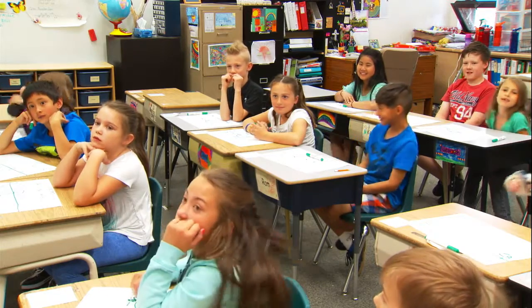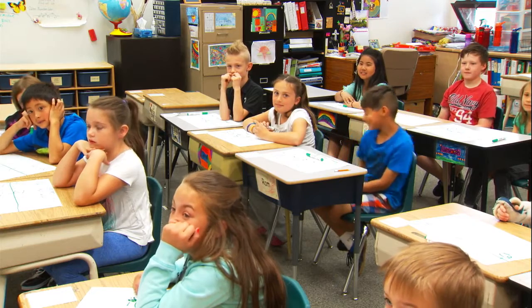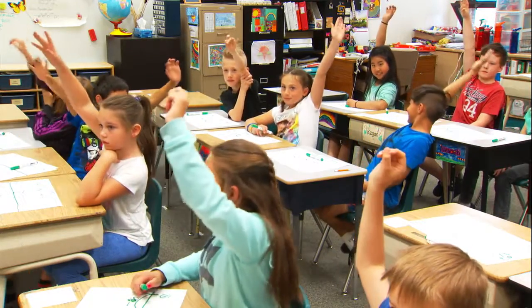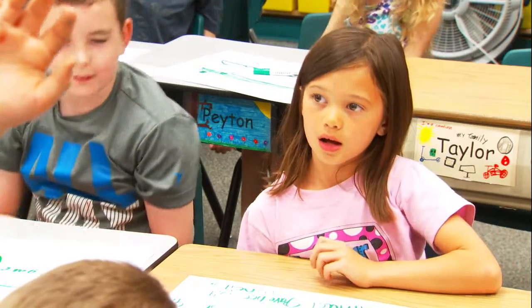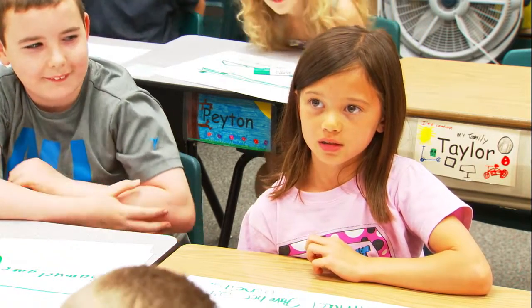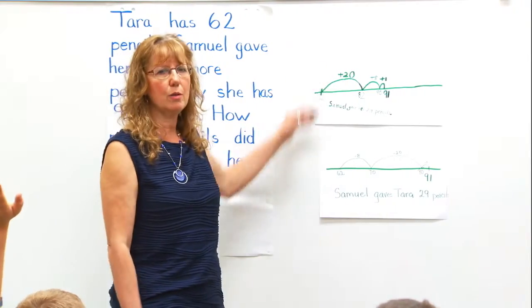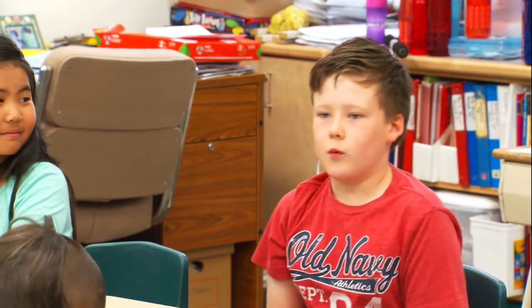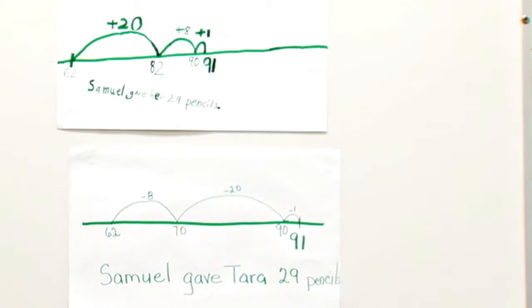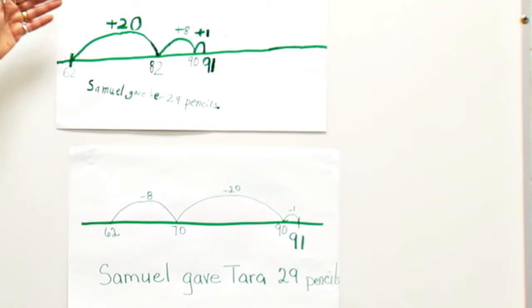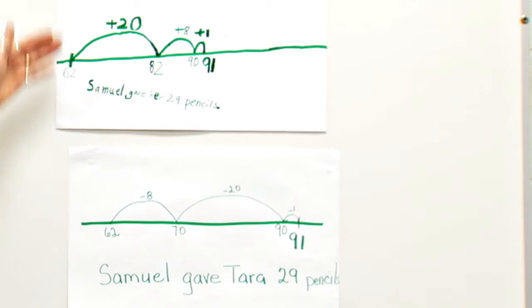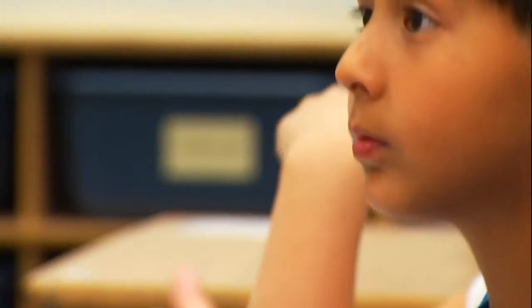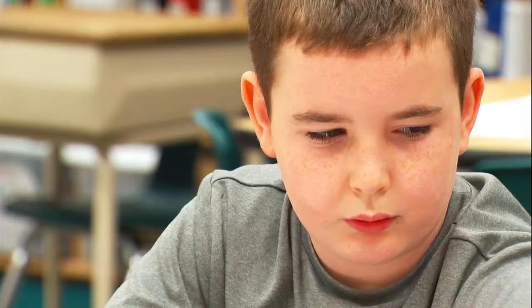Raise your hand if you can tell me how these two solutions are the same. They both have the same answer: 29. And how are the two solutions different? The top one starts at 62 and ends at 91, while the bottom one starts at 91 and ends at 62. By hearing other students explain the strategy, students recognize that there is more than one way to solve a problem.